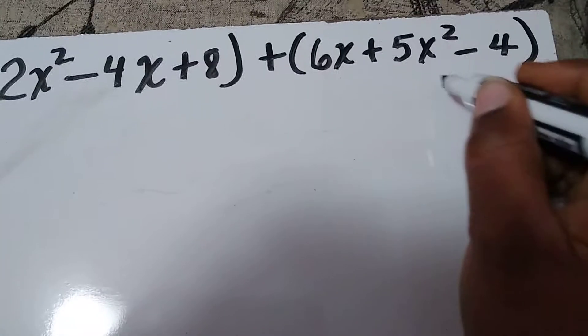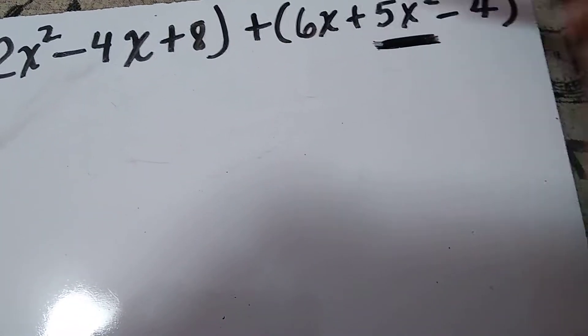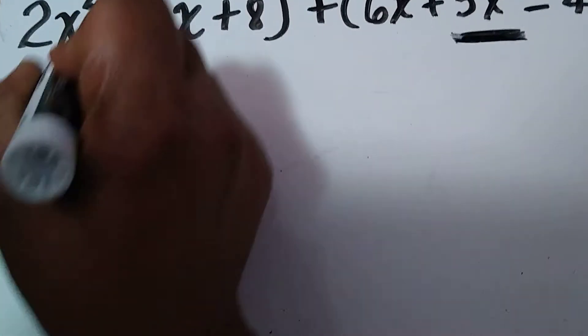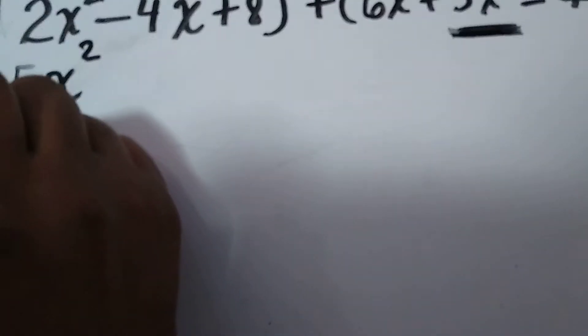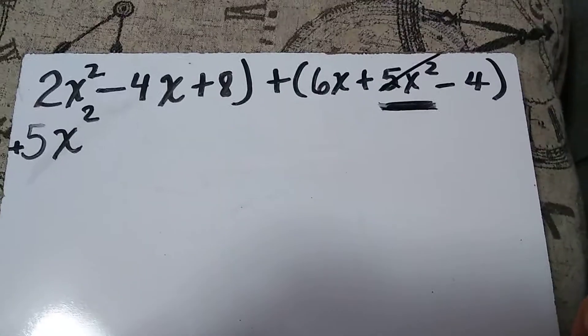So what I'm going to do, I'm going to take 5x² and there's an addition sign here, so I'm going to add it here. I'm going to put 5x² here. I know I'm going to plus it. I used that one already, so I'm going to cross that one out.